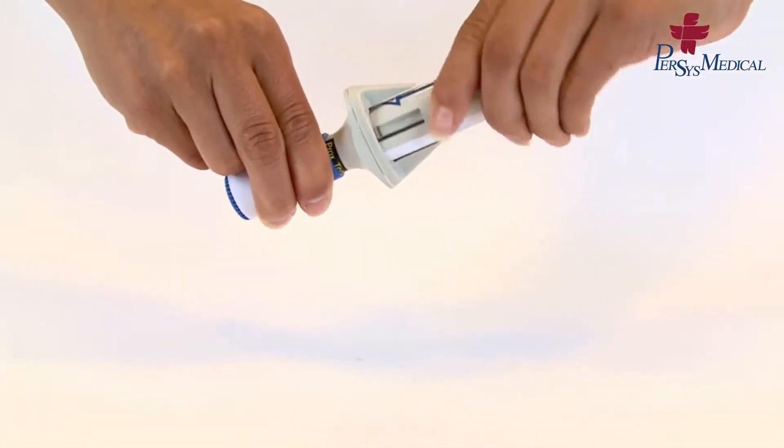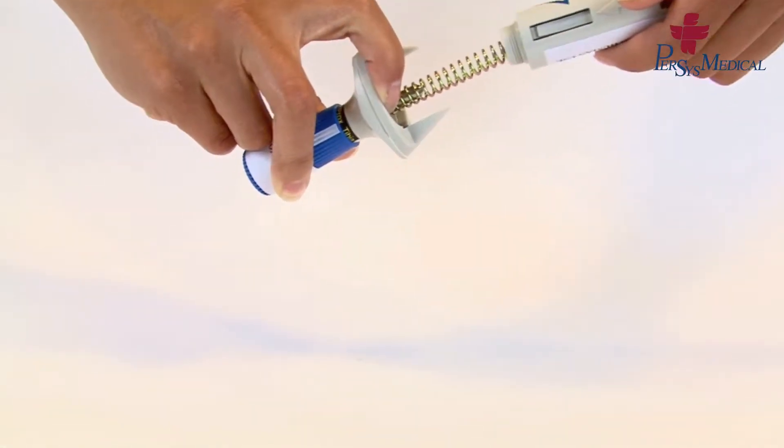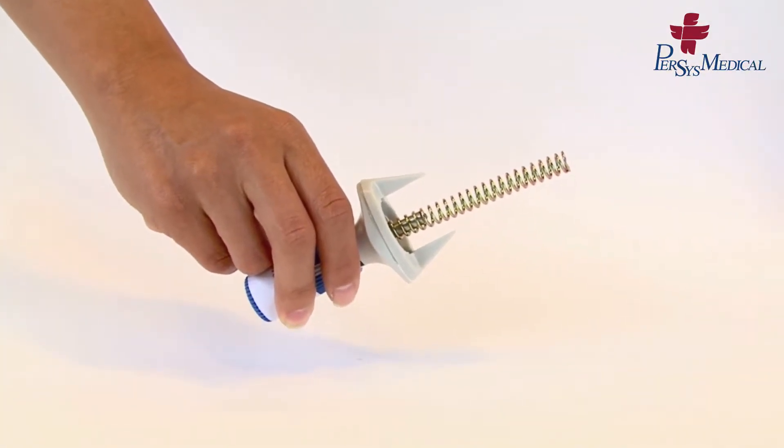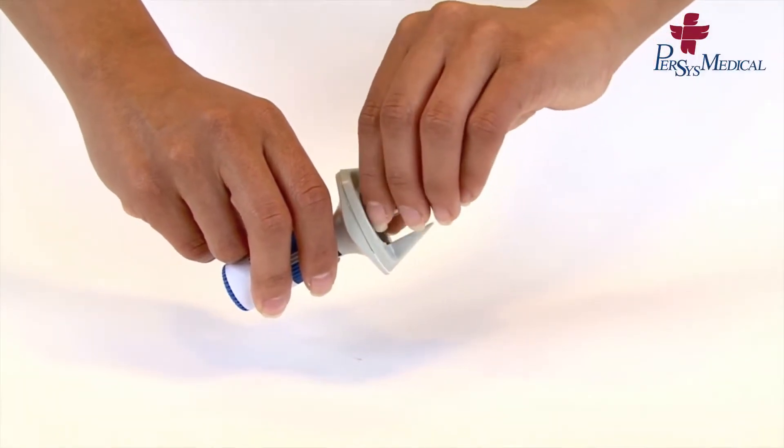Unscrew the bottom barrel from the top barrel. Take out the spring, then remove the piston.